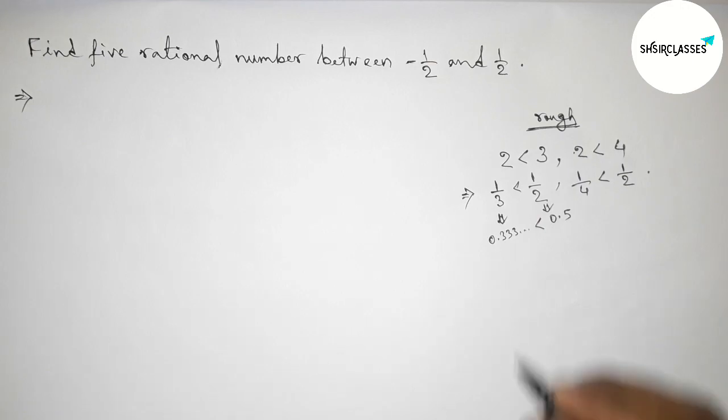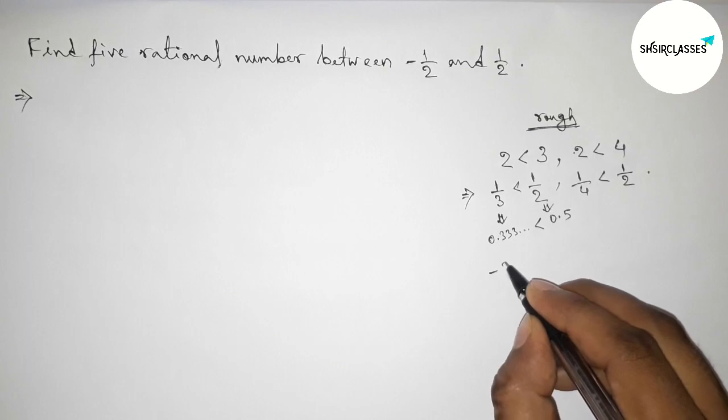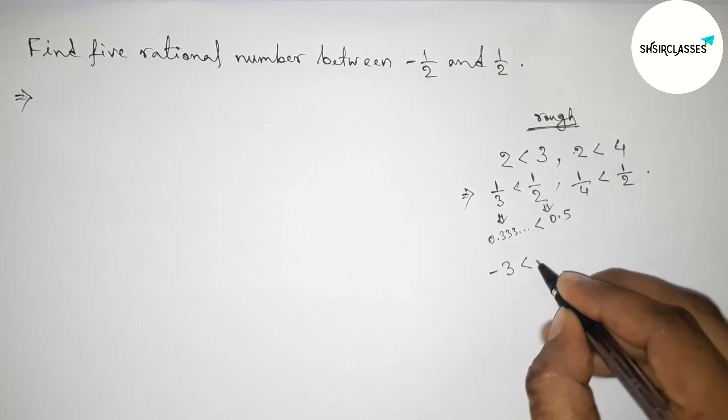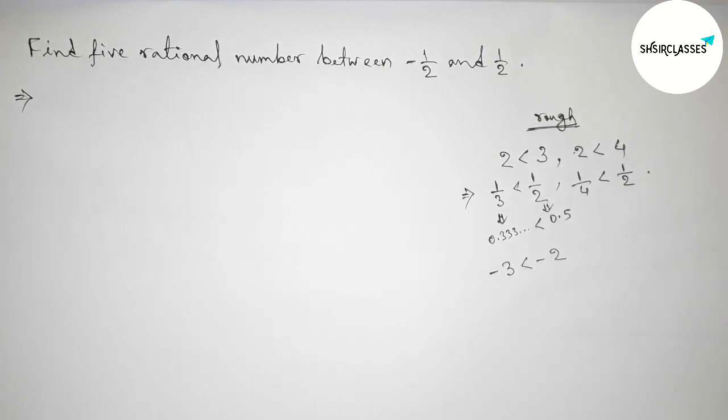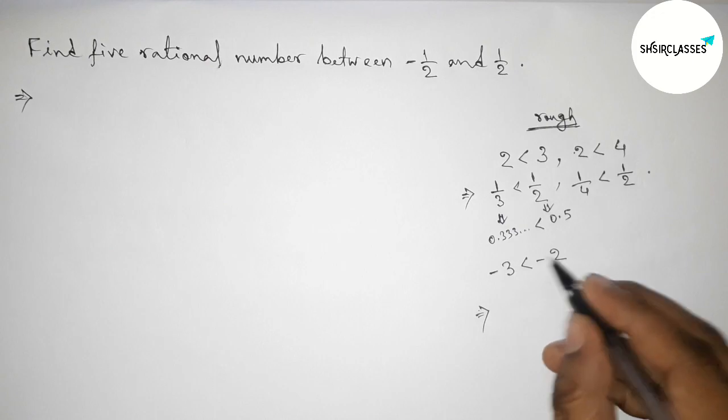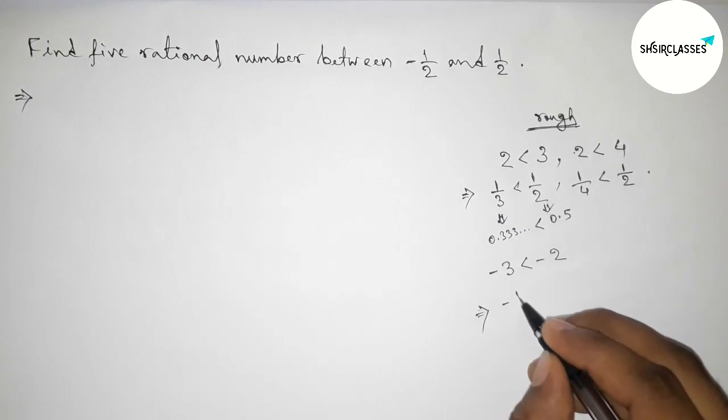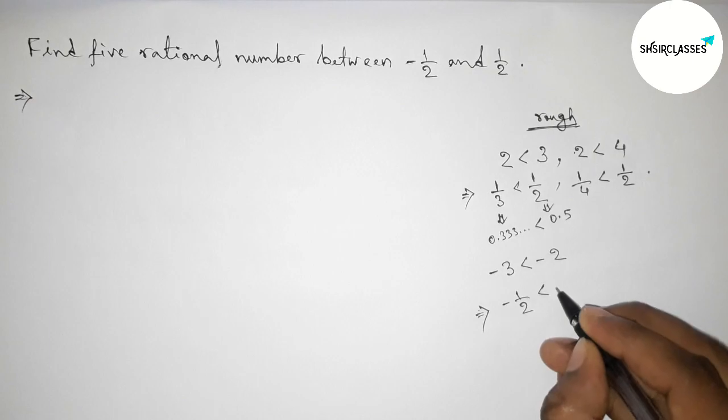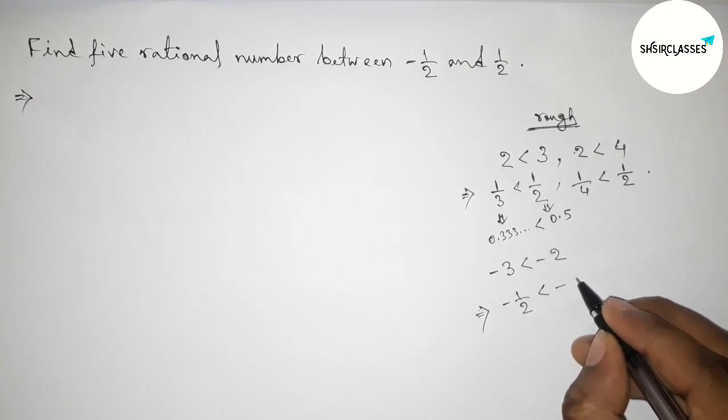Now taking minus 3 less than minus 2, so minus 2 greater than minus 3. Now taking inverse of both numbers, then the inequality will be changed. So that is minus 1 by 2 less than minus 1 by 3.